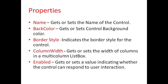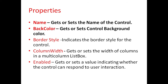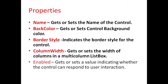Different properties for CheckedListBox are: Name, which is used to get or set the name of the control. BackColor property is used to get or set the control's background color. BorderStyle property indicates the border style for the control. ColumnWidth property is used to get or set the width of the columns in a multi-column list box.